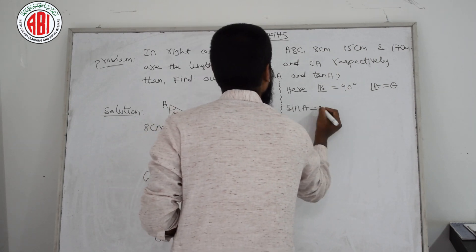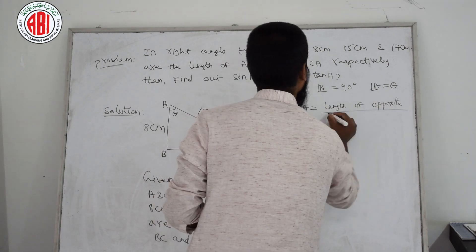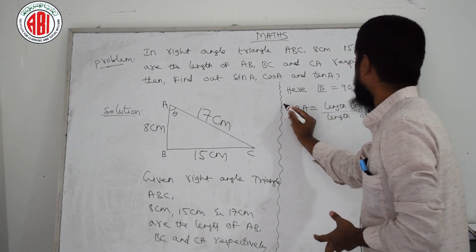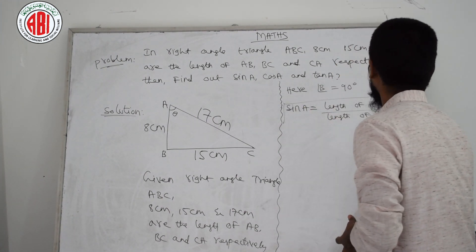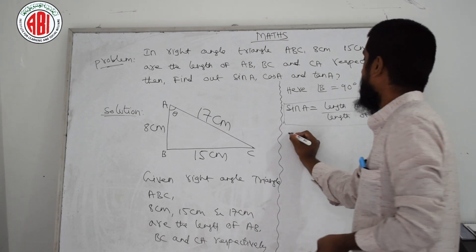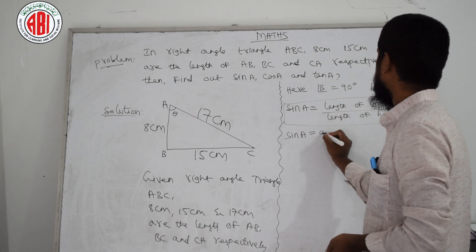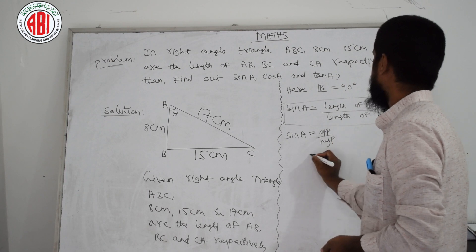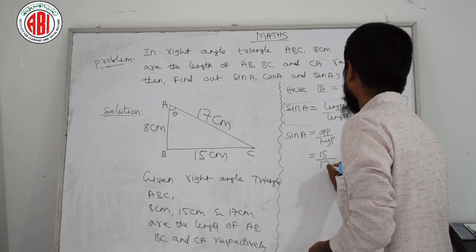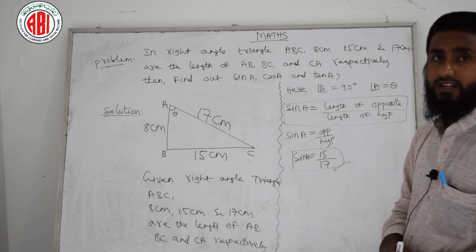Sin A is nothing but the length of opposite divided by length of hypotenuse. The formula: sin theta equals opposite by hypotenuse. So sin A equals opposite by hypotenuse. What is opposite here? Opposite is 15, and hypotenuse is 17. So sin A equals 15 by 17. First answer done — very simple.